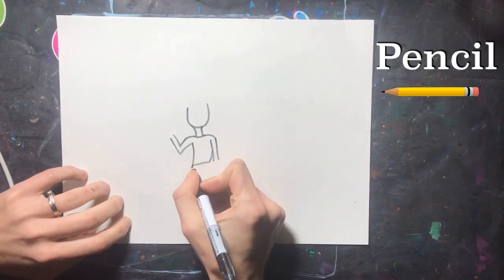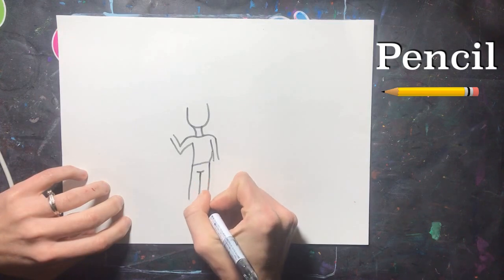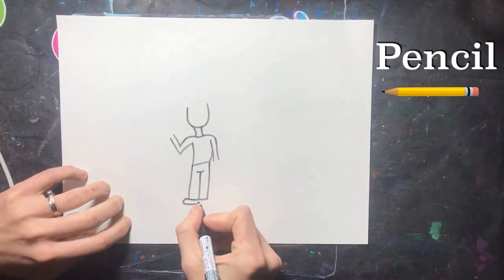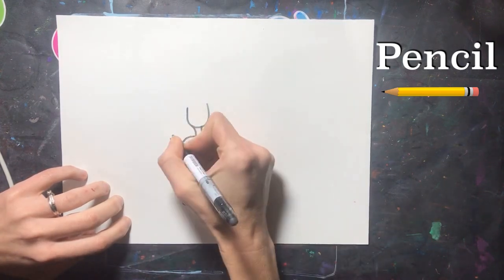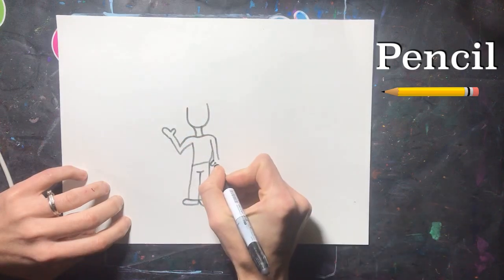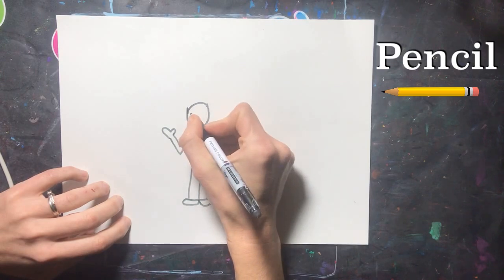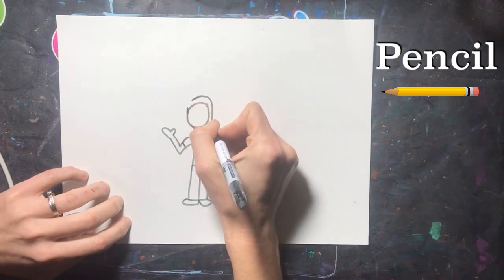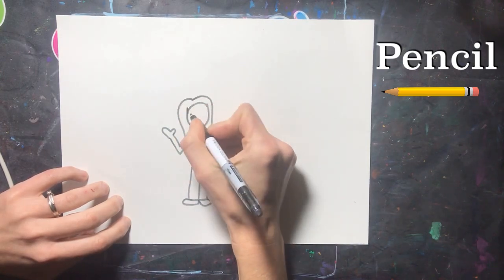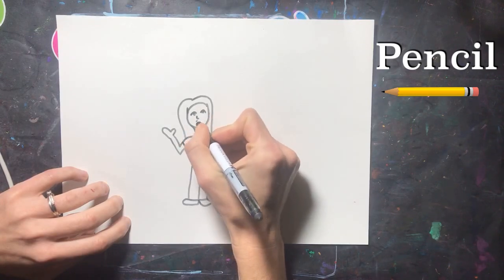But do make sure that you don't draw a stick person. Anytime you're drawing the arms or legs, make sure that you are doubling those lines so they aren't sticks. Notice how my person is pretty big right there in the middle of my paper.